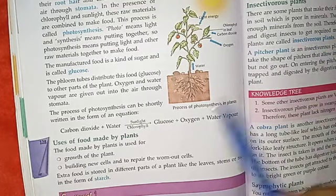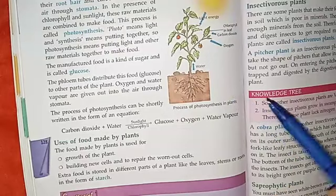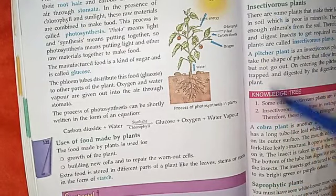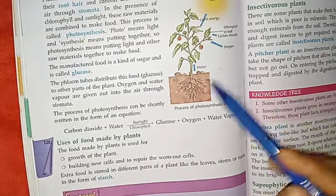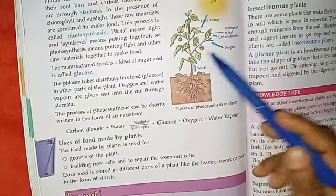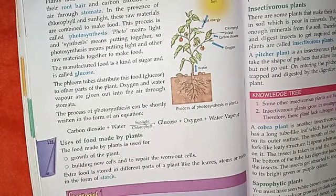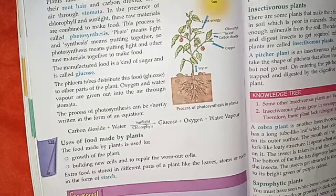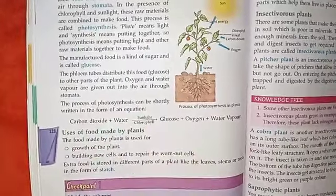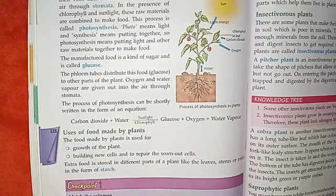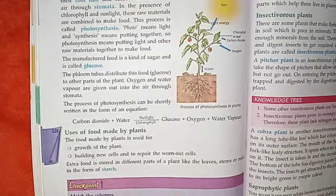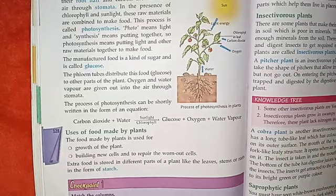In the presence of sunlight and chlorophyll, plants take in carbon dioxide and water. They use these raw materials to produce food. This process is called photosynthesis. Photosynthesis means putting light and other raw materials together to make food. The inputs are light energy, carbon dioxide, chlorophyll, and water — and the food is prepared.